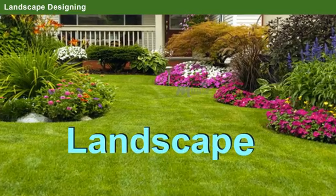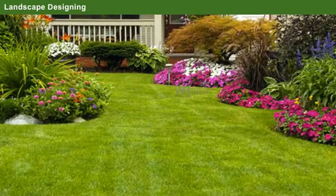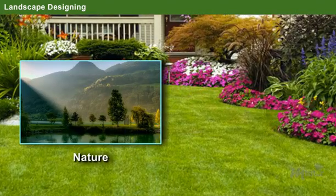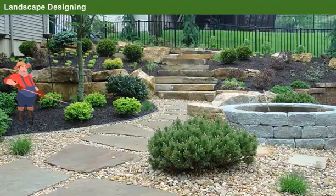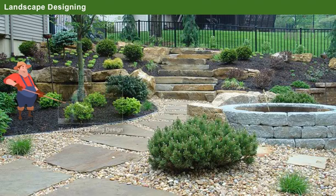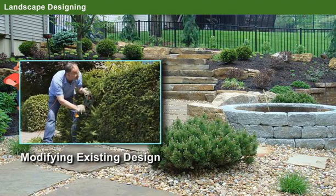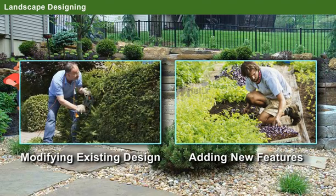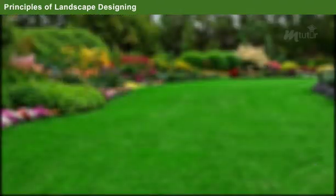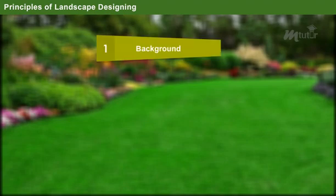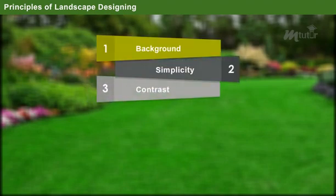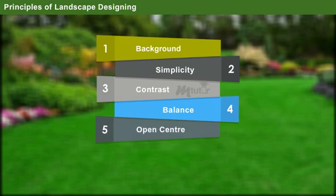Landscape generally denotes a piece of land with a combination of both nature and culture. The process of designing a piece of land or making it more attractive by modifying the existing design or adding new ornamental features is known as landscape designing. The principles of landscape design include background, simplicity, contrast, balance, open center, repetition and rhythm.